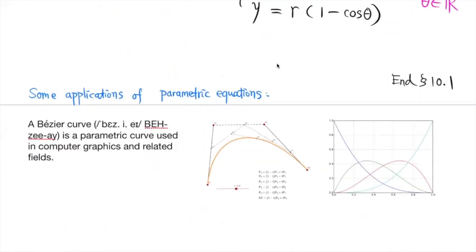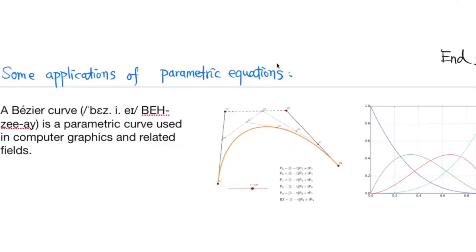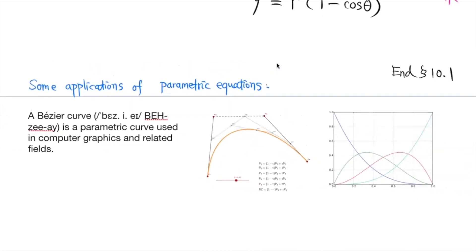So when do we use parametric equations? We use them to describe the orbit of planets, and also in computer graphics — for example, Bézier curves are parametric curves used extensively in computer graphics. There are many applications of parametric equations. That's the end of today's lesson.